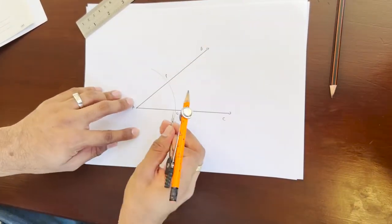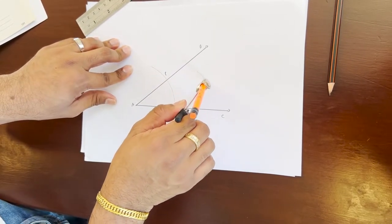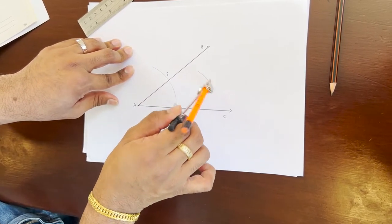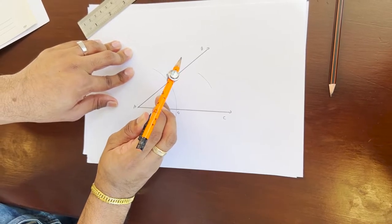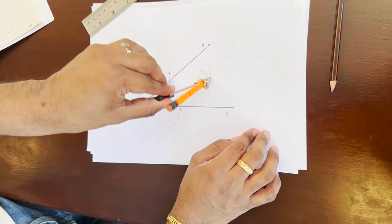Now I'm going to keep it at point O. I'm going to draw a small arc right about here. Now same way I'm going to keep it at point P. I'm going to draw another arc that intersects this arc.